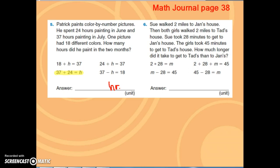So we need to find out how much longer, how many minutes longer did it take? We have some numbers up here with miles. Those numbers aren't really important at this point. We need to focus on our 28 minutes that it took to get to Jan's house, and our 45 minutes it took to get to Tad's house. Since we're trying to figure out how much longer, this is a subtraction problem. So we want to subtract 45 minus 28 equals m. That's our open number sentence.